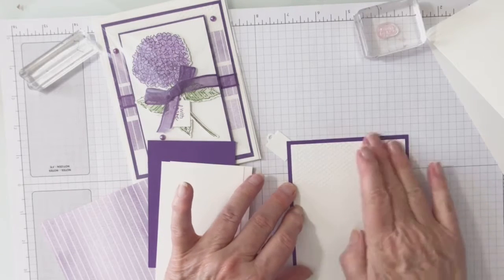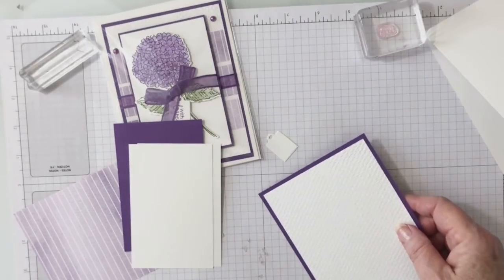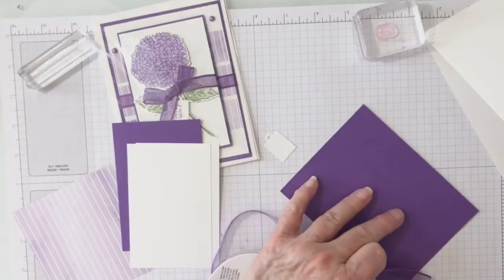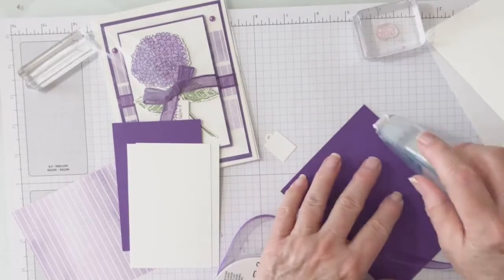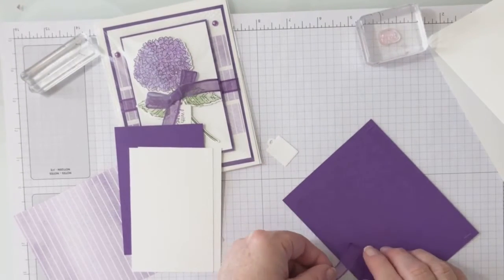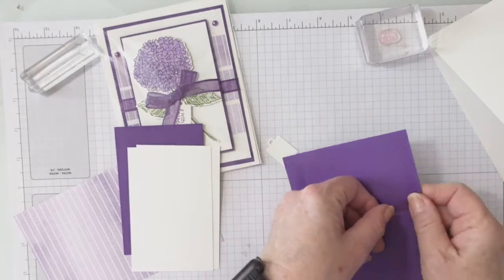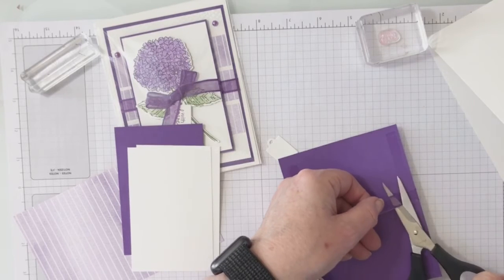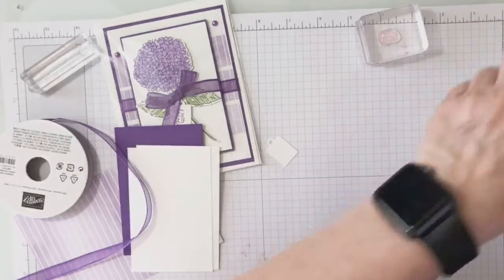Just leave that little border around the edge and then we're going to take our ribbon. You should have a roll of this in your packet and we're just going to go ahead and attach this ribbon to the two layers that we have here, trim that off, and then I'm going to attach that to my card front.